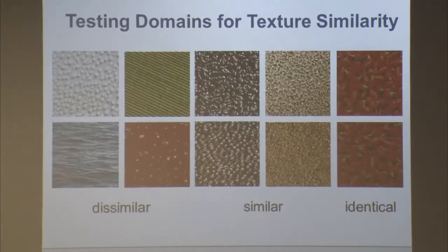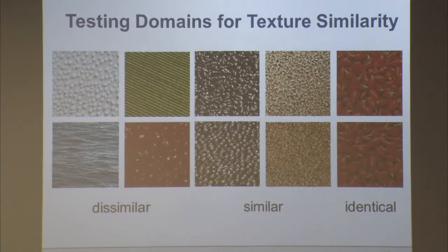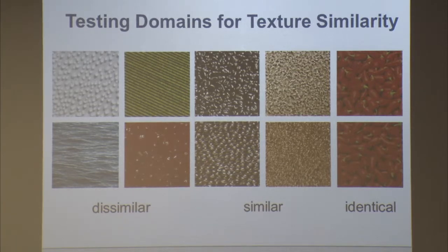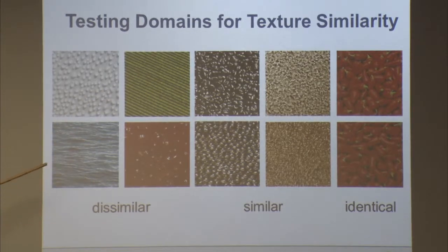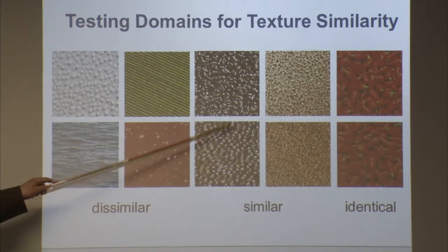The big question is: if you have a similarity metric, how do you know it works? Given any pair of textures in the world, you want the metric to give an appropriate similarity value — a complicated problem. If you randomly pick pairs to train, you might end up with textures that don't reveal how well it works. What I show here are pairs that are dissimilar: it's important to tell they're dissimilar, but deciding which pair is more dissimilar doesn't matter much. We do want to distinguish similar from dissimilar.